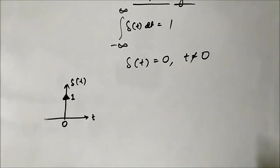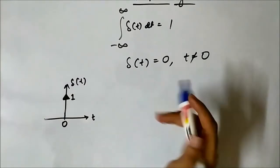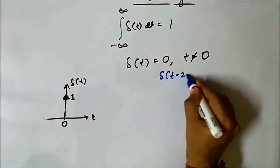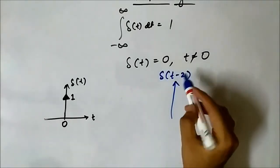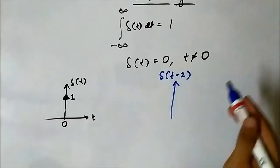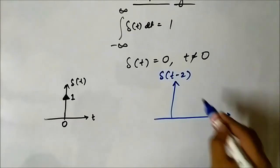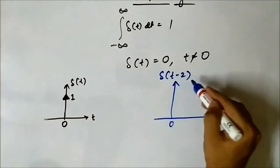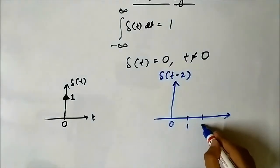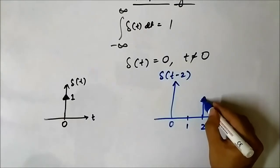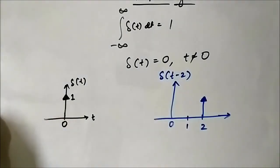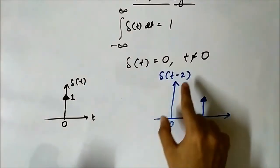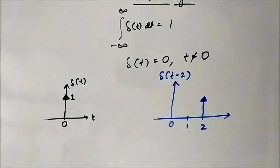Now if we want to perform the shifting operation in both directions — following the sign convention, minus means the shifting will take place to the right, and the number value gives us the information by how many units. Here the impulse signal will shift to the right by 2 units. This is the impulse signal delta(t minus 2), shifted to the right by 2 units.